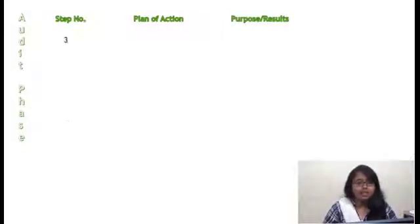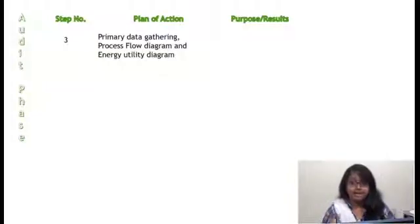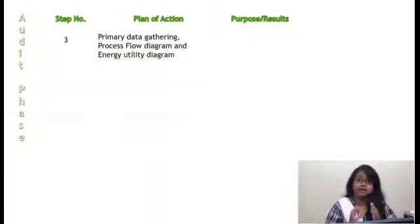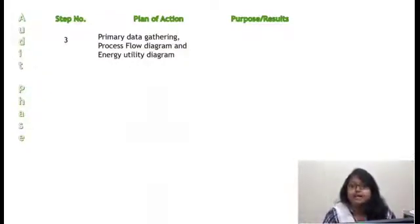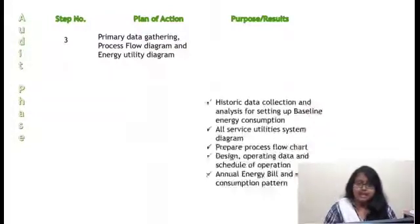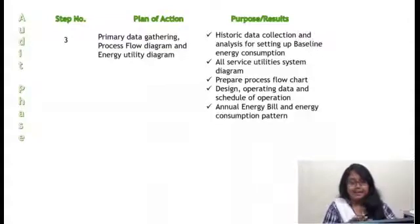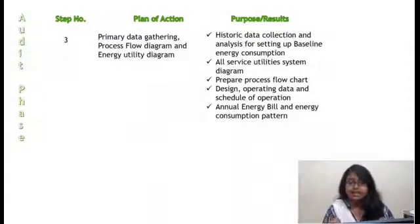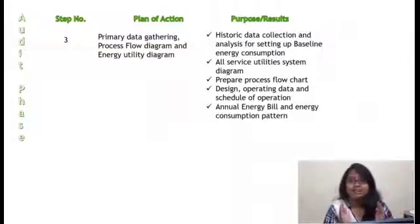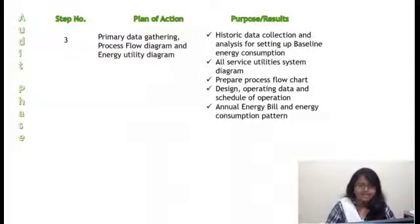Now comes the audit phase. In the audit phase we discuss three steps. Step 3 is primary data gathering — all primary important data is collected. We need to make process flow diagrams and energy utility diagrams. These techniques will be discussed in future upcoming videos. From this, historic data will be collected, a baseline for energy consumption pattern will be established, and you can prepare service utility system diagrams, flow charts, and look at operation data, scheduling of operations, annual energy bills, and consumption patterns.